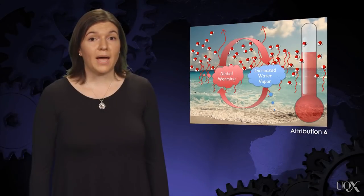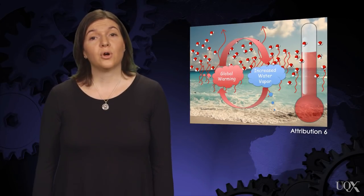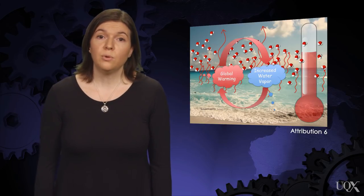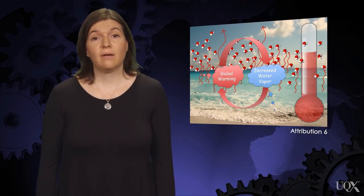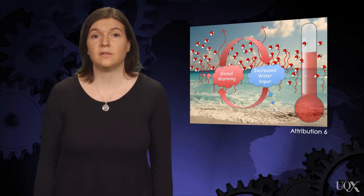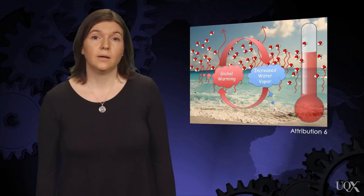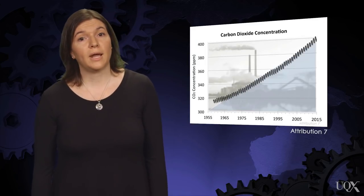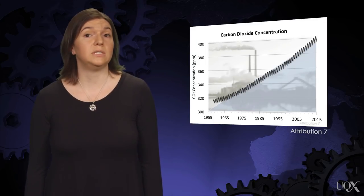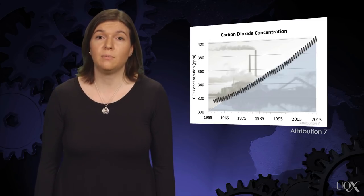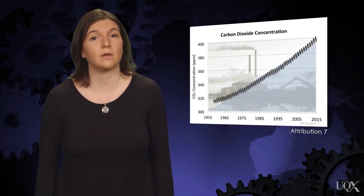Water vapor feedback plays a big part in making the Earth's climate sensitive to small changes. If the global climate and the global average temperatures stayed relatively the same, the water vapor feedback wouldn't be kicked into gear. But because we're increasing carbon dioxide from burning fossil fuels and deforestation, the Earth is getting slightly warmer, kicking this feedback into playing a large role in the climate system.